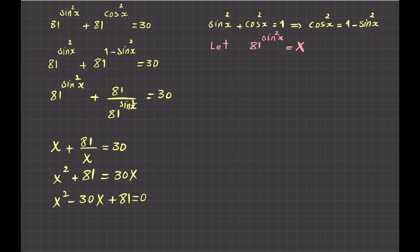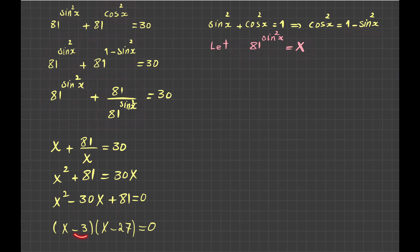I need two numbers with sum minus 30 and product 81: those are minus 3 and minus 27. So the equation factors as (X minus 3)(X minus 27) equals 0. Checking: minus 3 plus minus 27 is minus 30, and minus 3 times minus 27 is 81. Correct. So either X equals 3 or X equals 27.